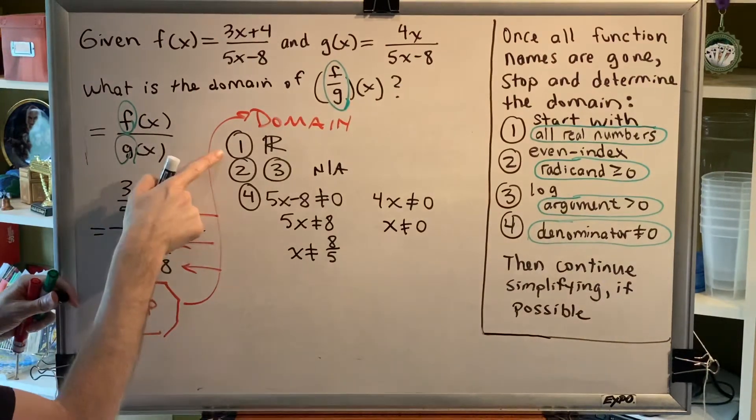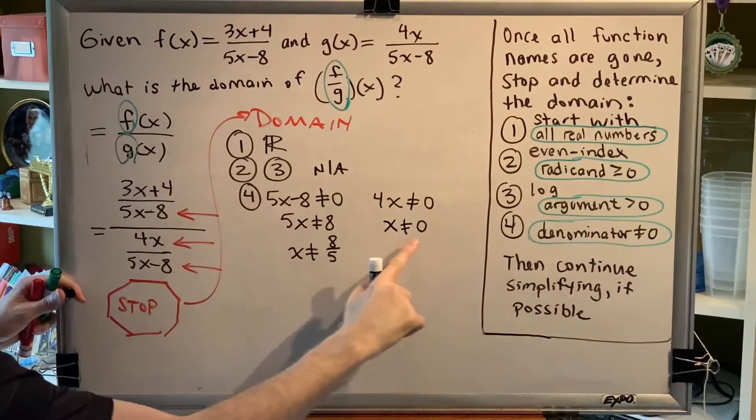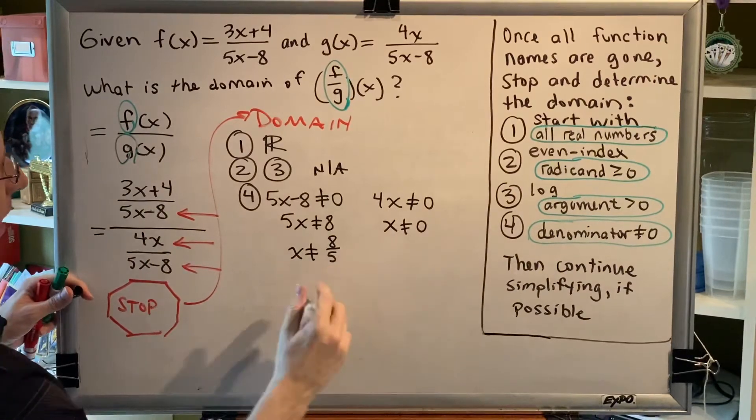So, our domain consists of every real number in the world, except for zero and 8 fifths.